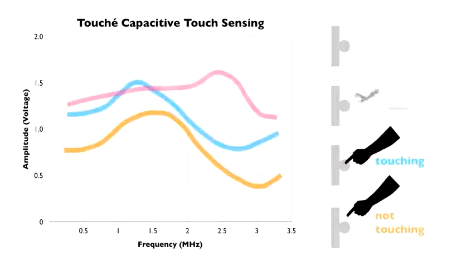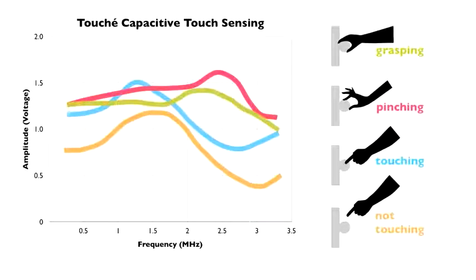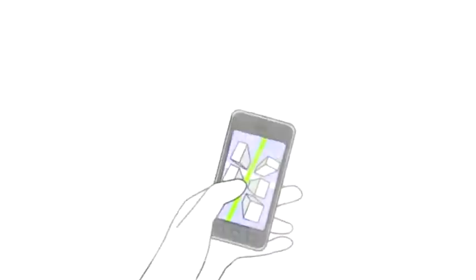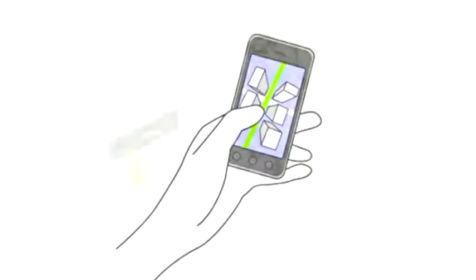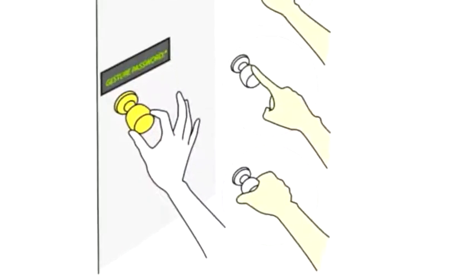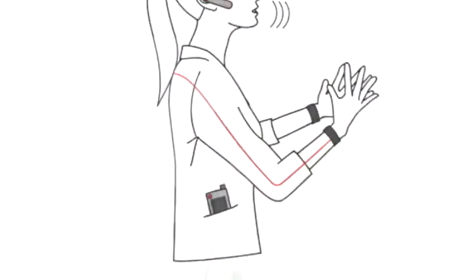We can pass this to a recognition engine, enabling a wide variety of touch gestures. Our approach can be used to enhance both traditional touch interaction, for example on smartphones, and also make everyday objects and materials touch and gesture sensitive.